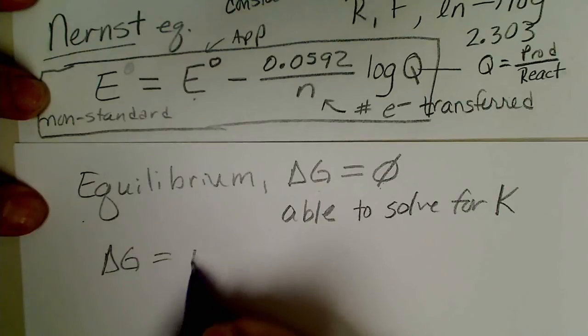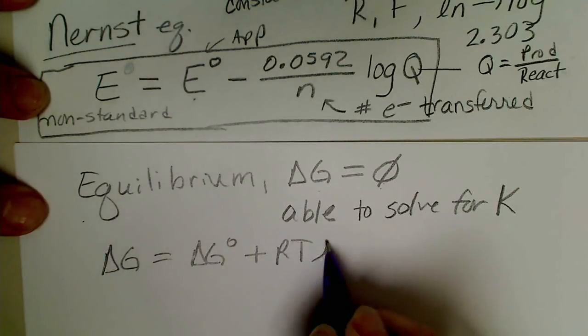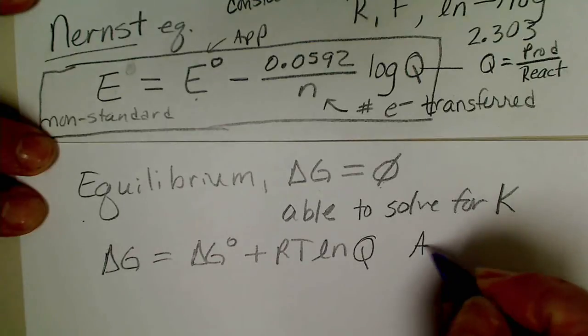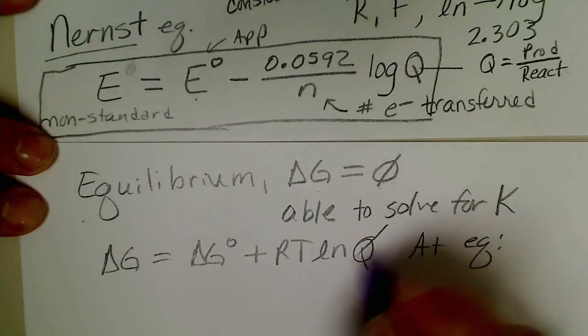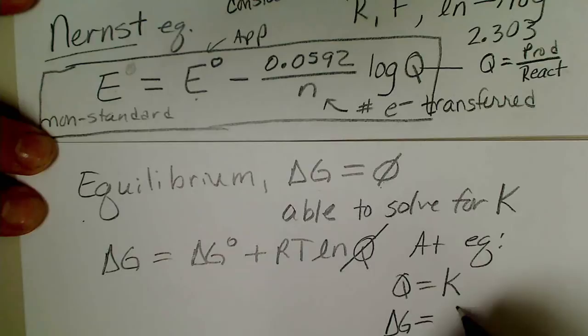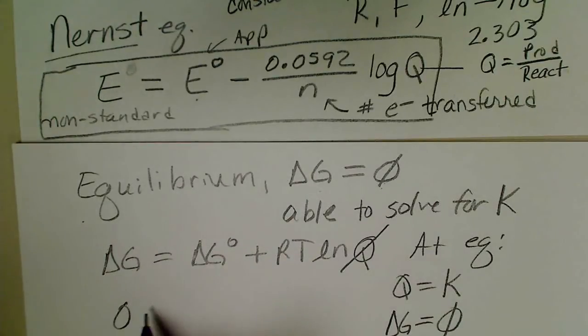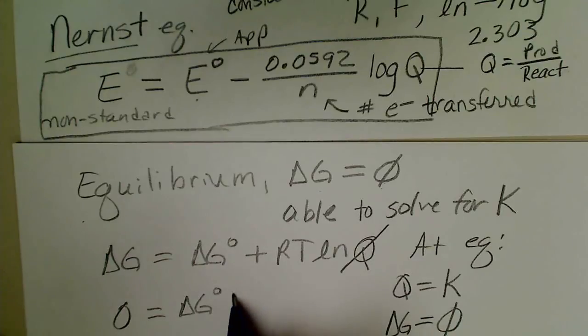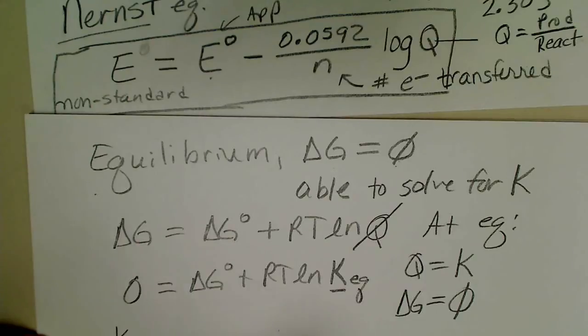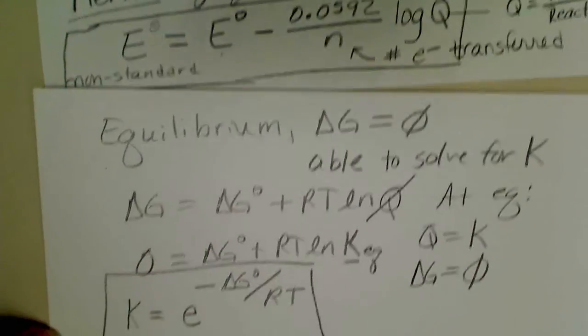So when we rearrange delta G equals delta G° plus RT ln Q, but Q at equilibrium is equal to K, and at equilibrium delta G is also equal to zero. So if we rearrange this equation we get RT natural log of K, and this is the equilibrium constant K, so we could solve for K, which would be e raised to the negative delta G° divided by RT. So this ends up being a very useful equation.